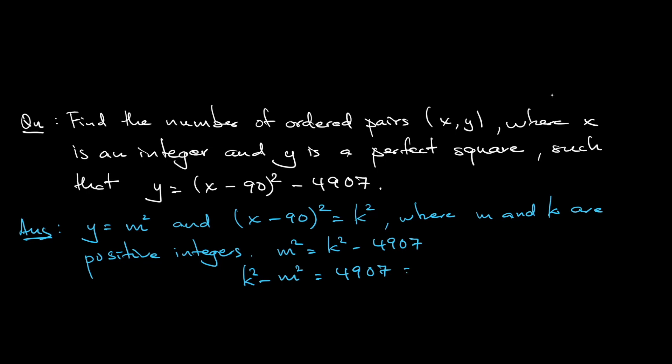Notice that this is obviously divisible by 7, as you can see, that is equal to 7 multiplied by 701, and of course, 1 multiplied by 4907. Notice that these two are the only possible factorization of 4907. Which means that (k minus m) multiplied by (k plus m) is either 7 multiplied by...